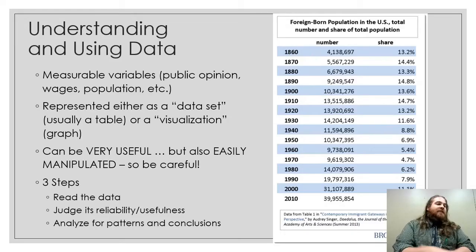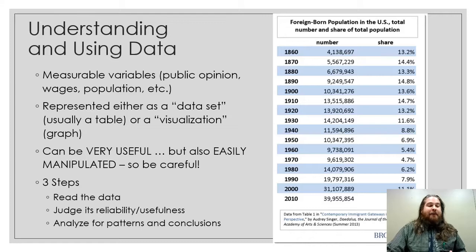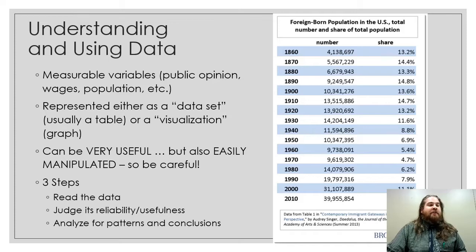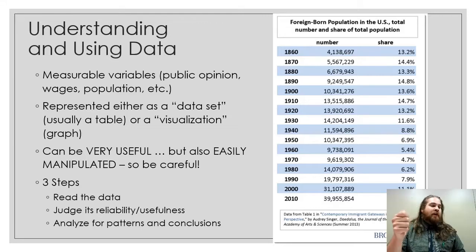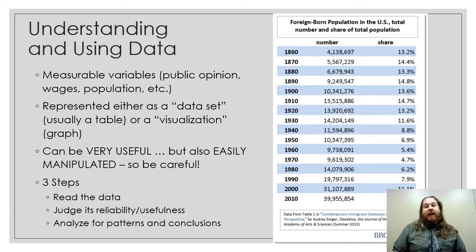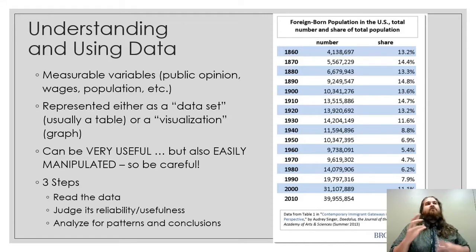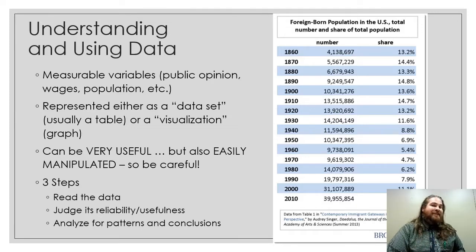Moving on from maps, I want to talk a little about data and data literacy. Data can be numbers, but it doesn't have to be — data is any measurable variable. So like public opinion, how popular is Mr. Moeller versus Ms. Schulte, you could look at wages, how much do people actually make, or what percentage of population are immigrants — you can see that on the table on the right. We represent these measurable variables either as a data set, which is a table that just has all the numbers, or as a visualization — a graph. Data is one of the most useful things we have in drawing really good conclusions, but data can also be very easily manipulated. So be very careful, as bad stats are often used to fool people.